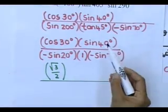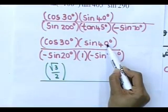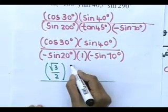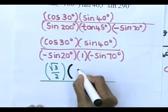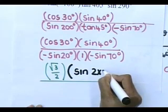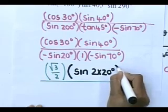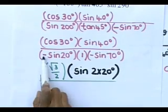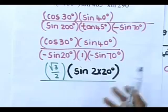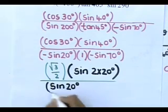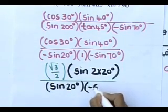Then I noticed: 40° is double 20° — 40 = 2 × 20. So I write sin(40°) as sin(2 × 20°). The two negatives cancel to give a positive, and multiplying by 1 leaves sin(2 × 20°) = sin(40°) in the numerator, with sin(70°) remaining. This is higher-grade thinking.